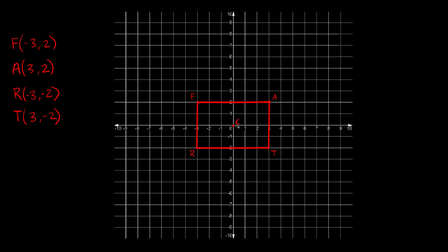The other really important thing is the scale factor, denoted by the letter K. The scale factor is a number that tells you how much you're going to increase or decrease the size of your shape. When K equals one, your shape doesn't change. If K equals two, your shape doubles in size. If K equals three, it triples. If K equals one half, your shape shrinks by 50%.